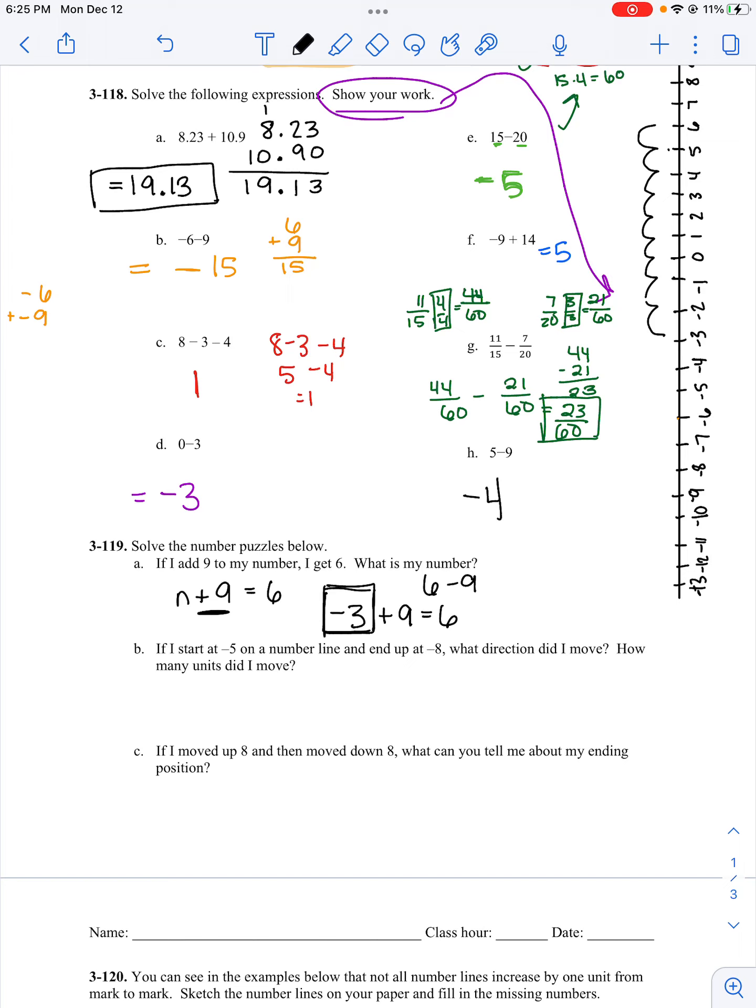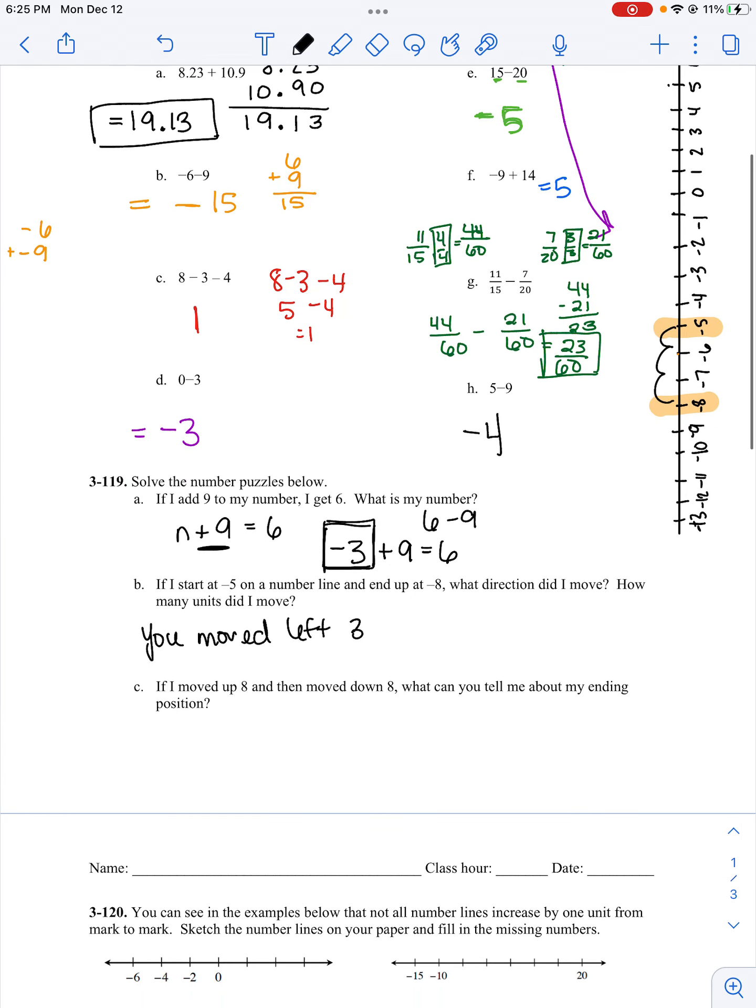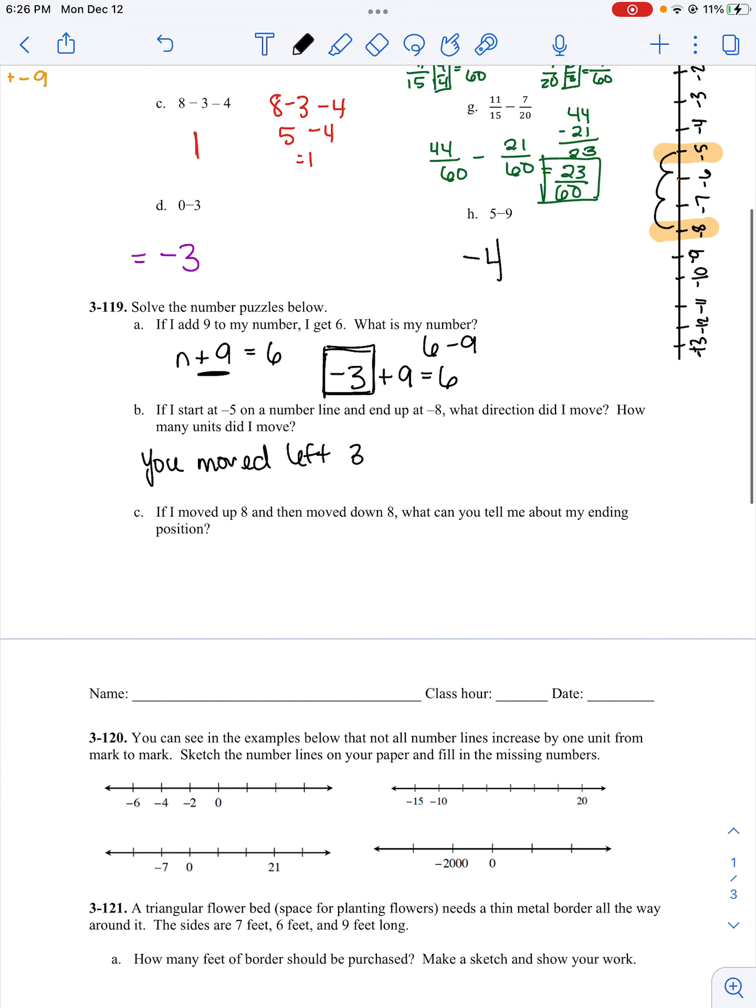Part B: If I start at negative 5 on a number line and end up at negative 8. Here's negative 5. Here's negative 8. This is where they ended up. What direction did they move? Well, you moved left. And it was 1, 2, 3 spaces. So, you moved left 3. Part C: If I moved up 8 and then moved back down 8, what can you tell me about my ending position? It is the same as the starting position.